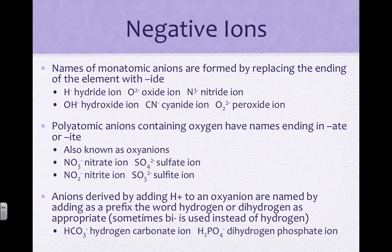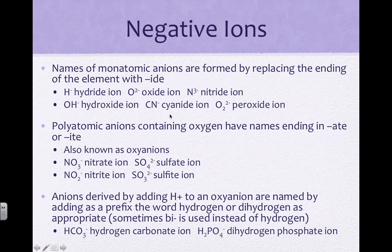In terms of negative ions, anions always end in '-ide' — so hydride, oxide, nitride, hydroxide, and so on. Polyatomic anions usually end in '-ate' or '-ite.' The exceptions are three polyatomic ions that end in '-ide': hydroxide, cyanide, and peroxide. Everything else usually ends in '-ate' or '-ite,' because of the oxygen that they all have in common.